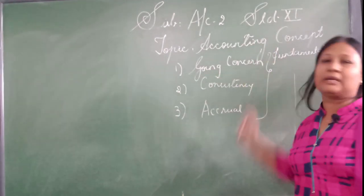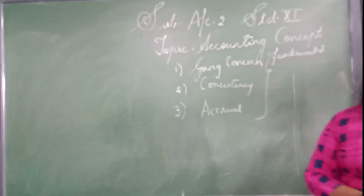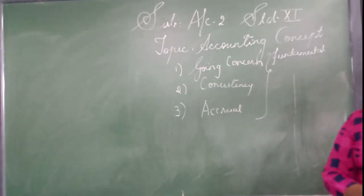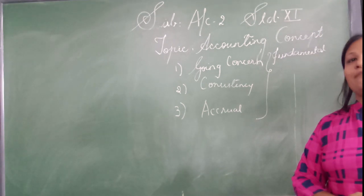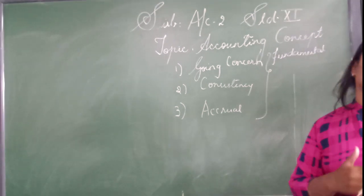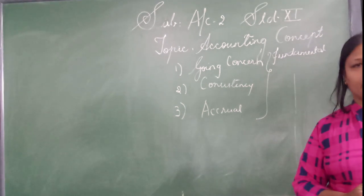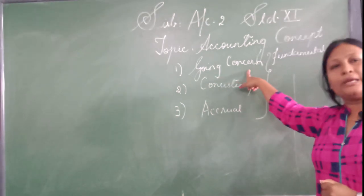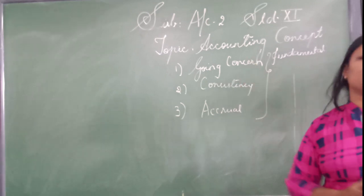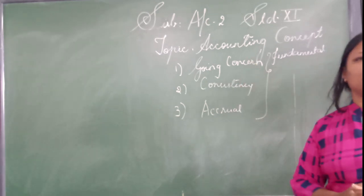Out of that, first is going concern. What do we mean by going concern? Going concern means whenever we make book of accounts, we have an assumption that business will go on for many more coming years. So all the transactions are written on the basis of going concern, that is my business will flourish for many more coming years.